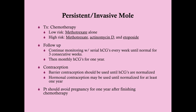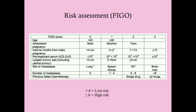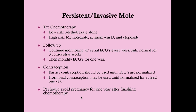The treatment is chemotherapy. We base treatment on whether the patient is low risk or high risk using the FIGO score — the International Federation of Gynecology and Obstetrics. They score based on risk factors and who's going to respond better to methotrexate alone versus who won't. If the score is greater than six, it's high risk; if less than six, it's low risk. Low risk patients can take methotrexate alone, which has advantages because it doesn't cause hair loss and other side effects that combination chemotherapy can.